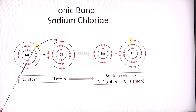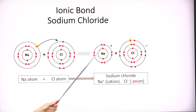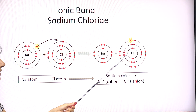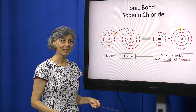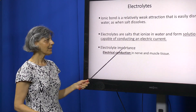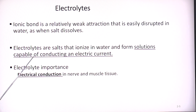A famous example of ionic bonds is sodium and chloride. Sodium donates one electron to chloride and they bind to form sodium chloride. Sodium has a positive charge — it is a cation — and chloride has a negative charge because of the gained electron, making it an anion. Importantly, sodium chloride can dissolve in water because the ionic bond is a relatively weak bond, and this solution has the ability to conduct an electrical current. So sodium chloride is called an electrolyte.